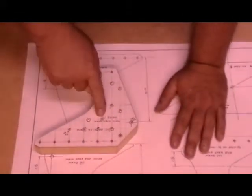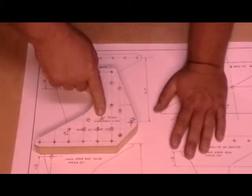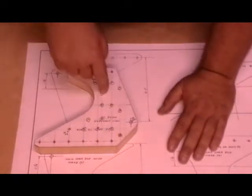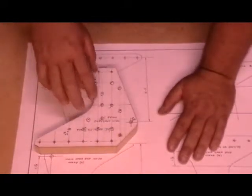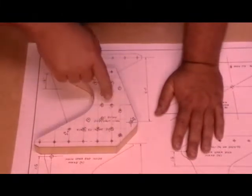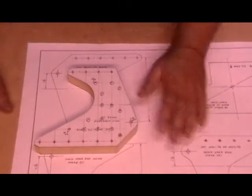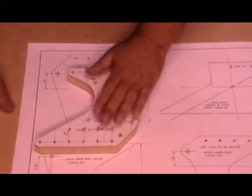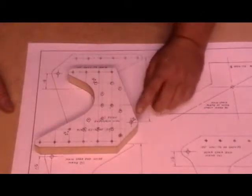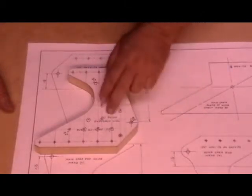This spar doubler, this attach fitting, cannot have any holes in it that are just holes. It is mission critical that this thing have exactly the holes it's supposed to have in exactly the spot they're supposed to be. Can't have any scratches in this aluminum, can't be damaged in any way because everything hangs on that bolt hole right there, and we do not want this thing to fail.